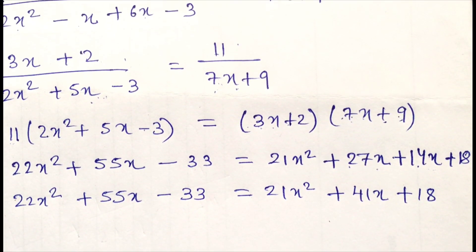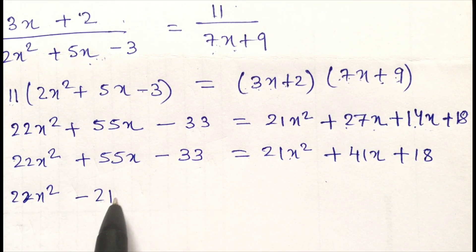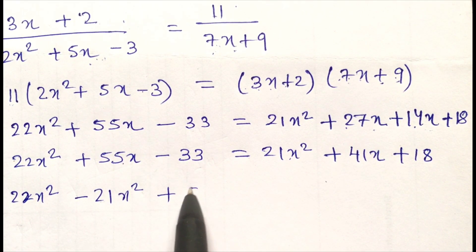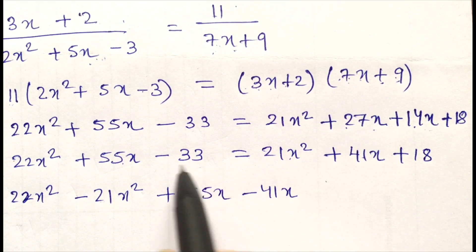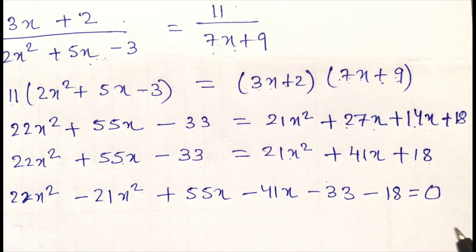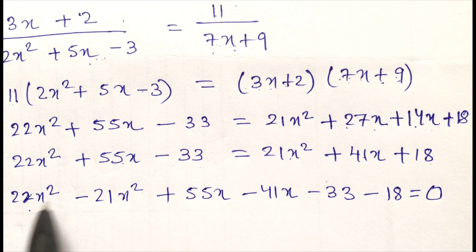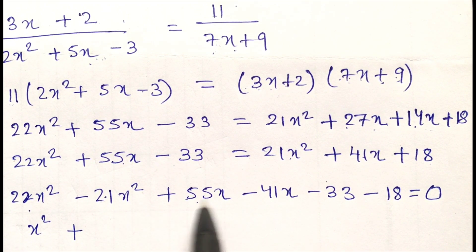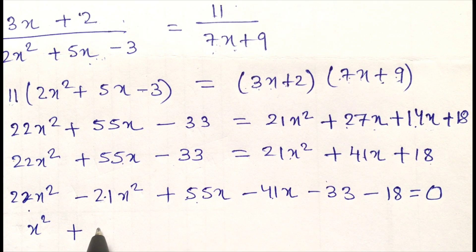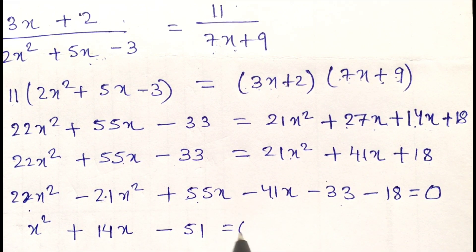Now take all the terms from the right hand side to the left hand side: 22x² - 21x² + 55x - 41x - 33 - 18 = 0. Simplifying: 1x² + 14x - 51 = 0.